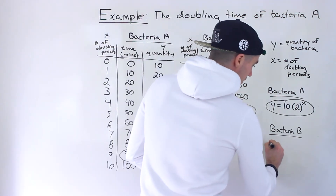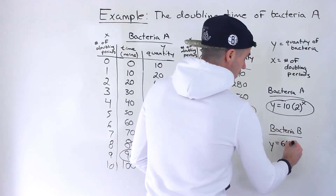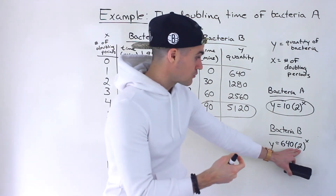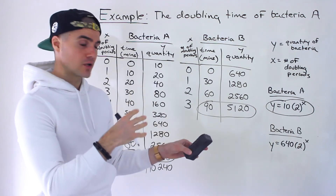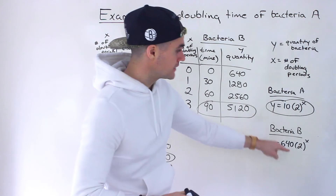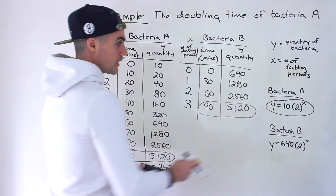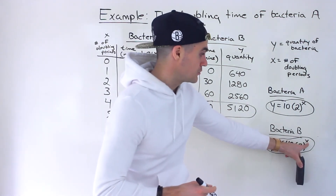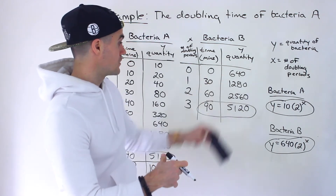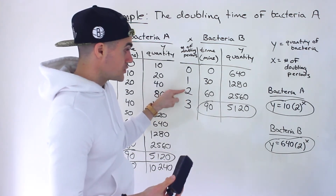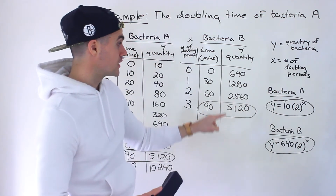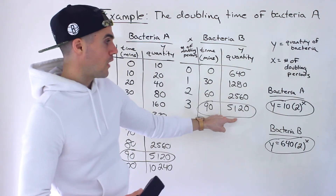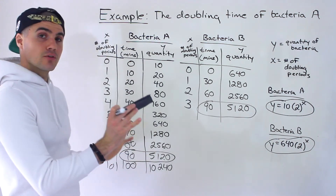Following the same format for bacteria B, the equation is y = 640 × 2^x. The base is 2 because we're dealing with doubling periods — if it were tripling it would be 3, and for half-life decay it would be one-half. The initial population 640 is the multiplier. Testing x = 0: 2^0 = 1 times 640 gives 640. Testing x = 2: 2^2 = 4 times 640 gives 2,560. Those are the two equations when X equals the number of doubling periods.